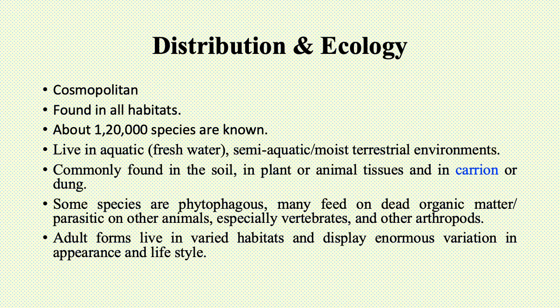Dipterans live in aquatic — mainly fresh water — environments, as well as semi-aquatic or moist terrestrial environments. They are commonly found in soil, in plant or animal tissues, and in carrion or dung. Carrion means the dead bodies of animals or humans. Some species are phytophagous, feeding on plants, or may feed on dead organic matter, or be parasites on other animals — for example, mosquitoes are parasites on vertebrates and other arthropods.